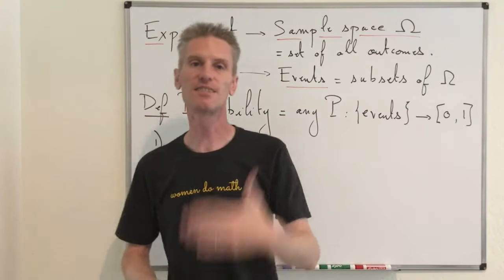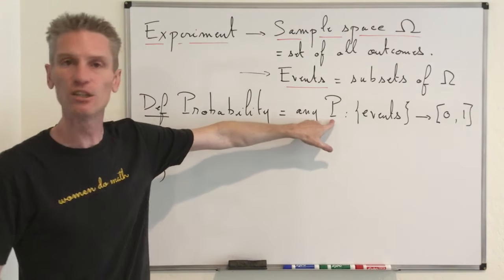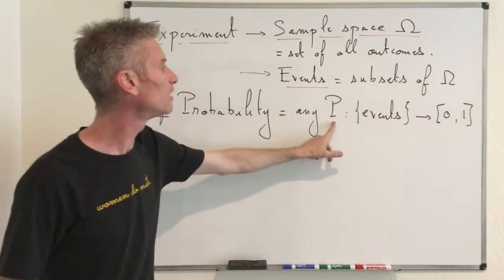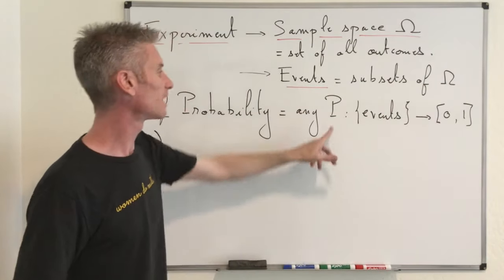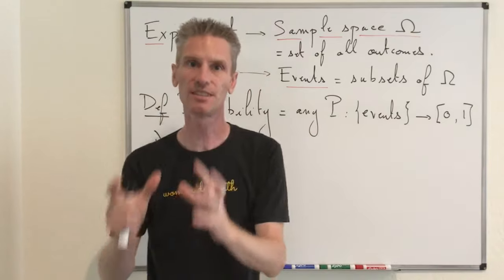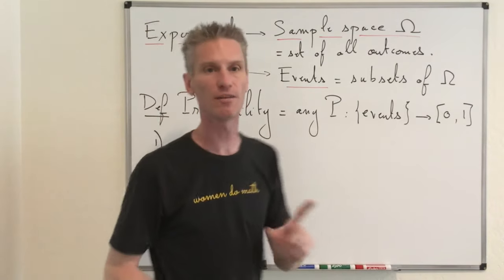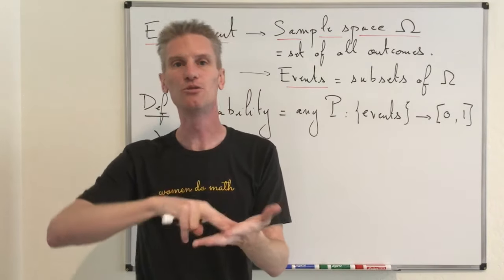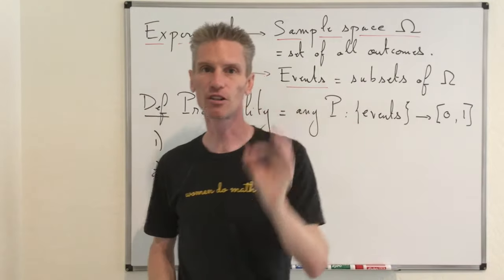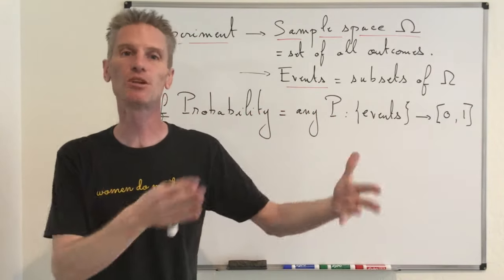To give you an example: if your experiment is rolling two dice, you can look at the probability of having a double six — that's the probability of one specific outcome in Omega — but you can also look at probabilities of something more complicated, like the probability that the sum is equal to seven. In that case, instead of looking at the function at a single point in Omega, you look at the function of a subset of Omega, covering outcomes like (1,6), (2,5), (3,4), and so on.